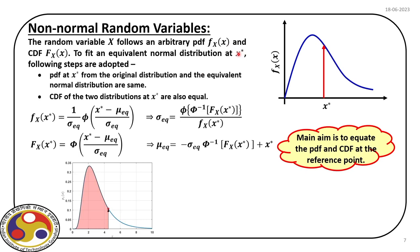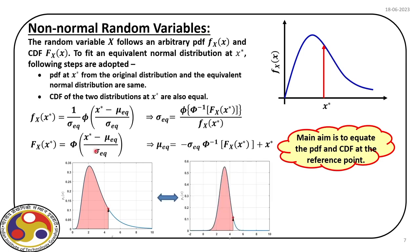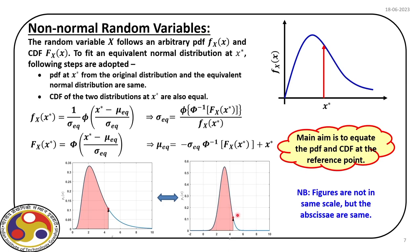Schematically, if we have an arbitrary distribution represented by the blue line, and at the reference point x* (shown as a red dot) we fit an equivalent normal distribution, we equate PDF and CDF to find μ_eq and σ_eq. Effectively, the y-coordinate (PDF value) from the original and equivalent normal distributions are the same at x*, and the area under both distributions up to x* — the shaded regions — are also the same.